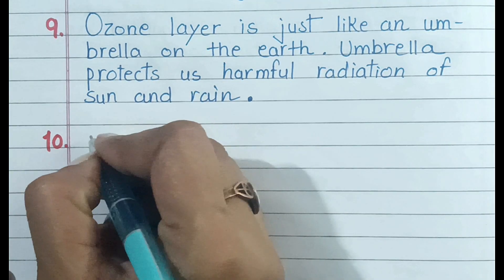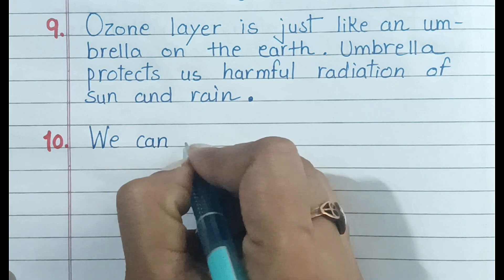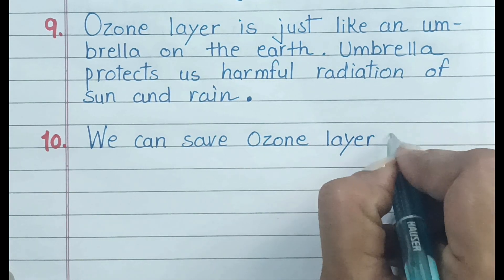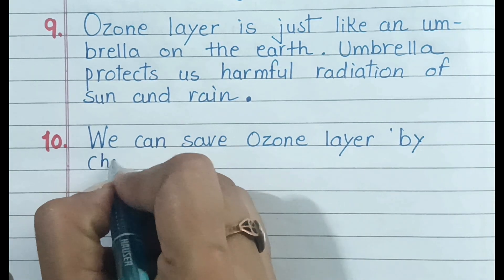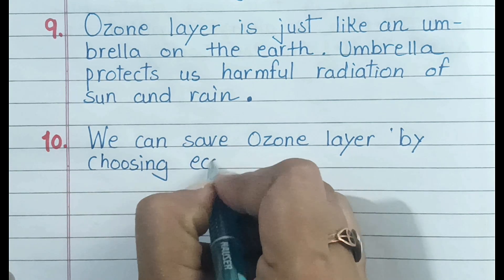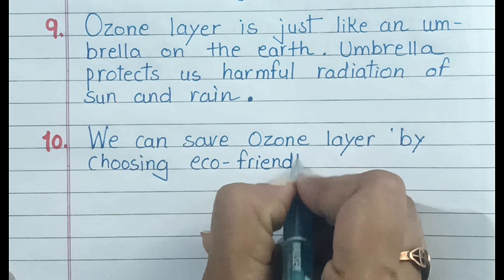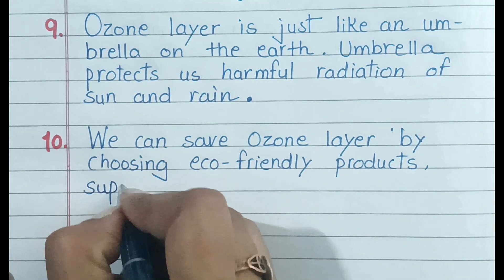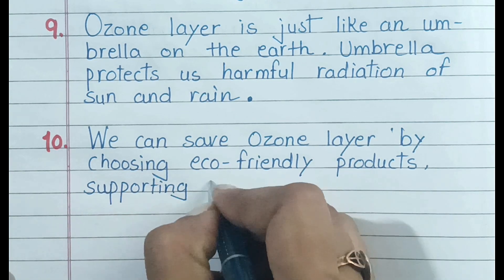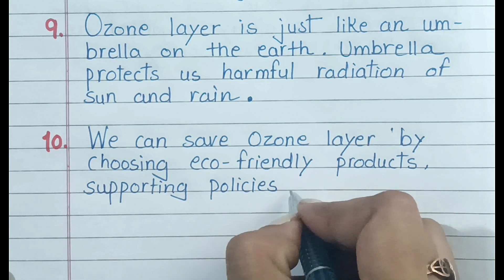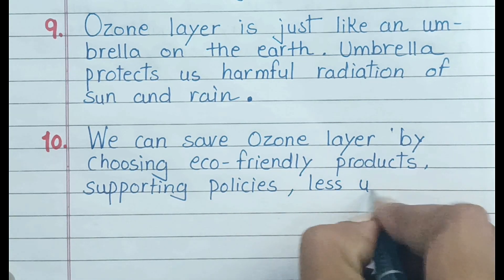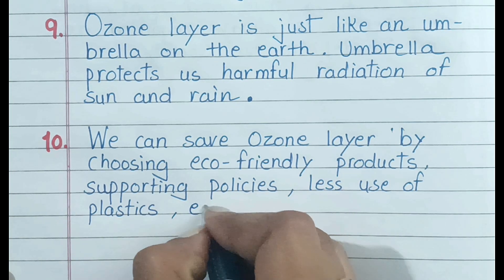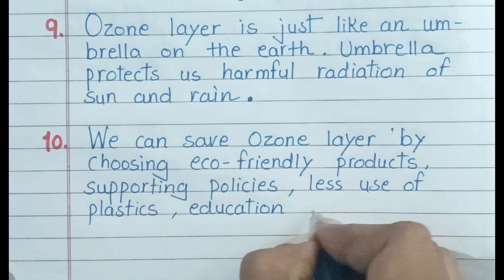And last, Number 10: We can save the ozone layer by choosing eco-friendly products, supporting green policies, less use of plastics, education, etc.